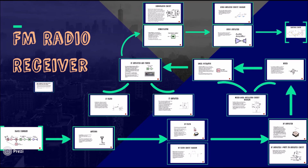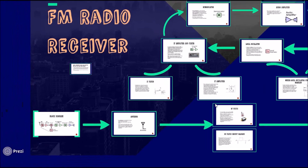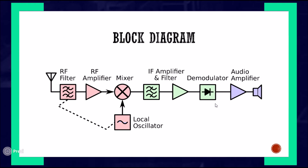Here is the FM radio receiver roadmap, at the end of which you will know everything about every component used in the FM radio receiver. The block diagram consists of: the antenna, the RF filter, the RF amplifier, followed by the mixer and local oscillator, after which comes the IF amplifier and filter, the demodulator, the audio amplifier, and the speaker for output.